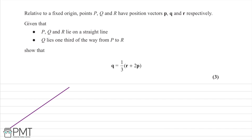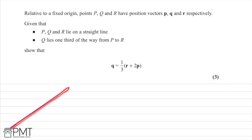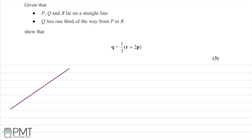In this question, relative to a fixed origin, points P, Q, and R have position vectors p, q, and r respectively. We're told P, Q, and R lie on a straight line, and Q lies one third of the way from P to R. We're asked to show that the position vector q = (1/3)(r + 2p), worth three marks.